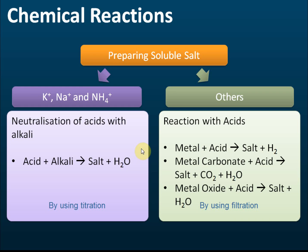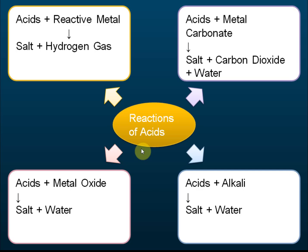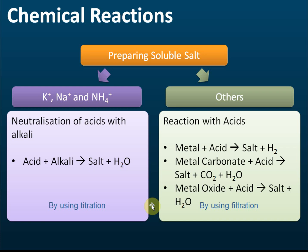To prepare soluble salt, we use the four chemical reactions of acid. Acids undergo four reactions: acid with reactive metals produces salt and hydrogen gas; acid with metal carbonates produces salt, carbon dioxide, and water; acid with alkali produces salt and water; and acid with metal oxide produces salt and water. In all four reactions, one of the products is salt.